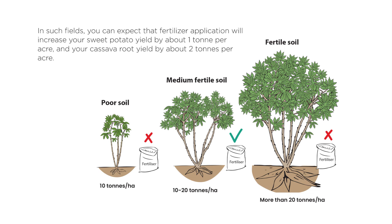In such fields, you can expect that fertilizer application will increase your sweet potato yield by about 1 ton per acre and your cassava root yield by about 2 tons per acre.